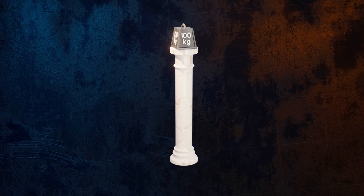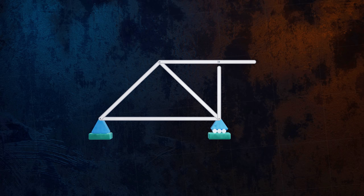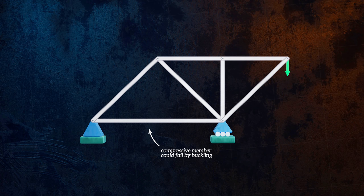The most simple example of a structure at risk of buckling is a column. But individual members in trusses and frames can also be loaded in compression, and so are at risk of buckling.